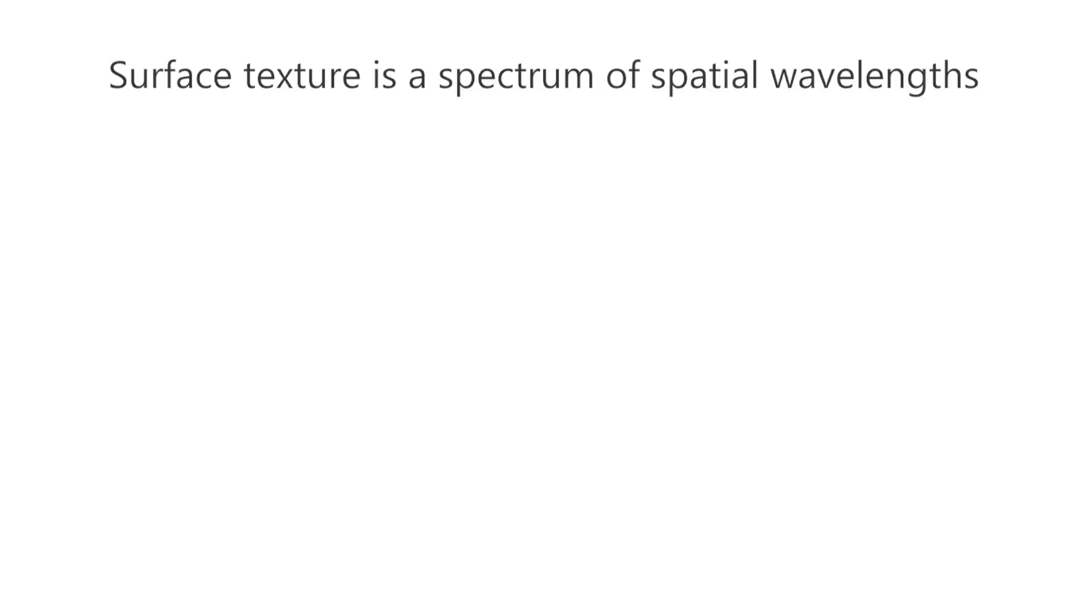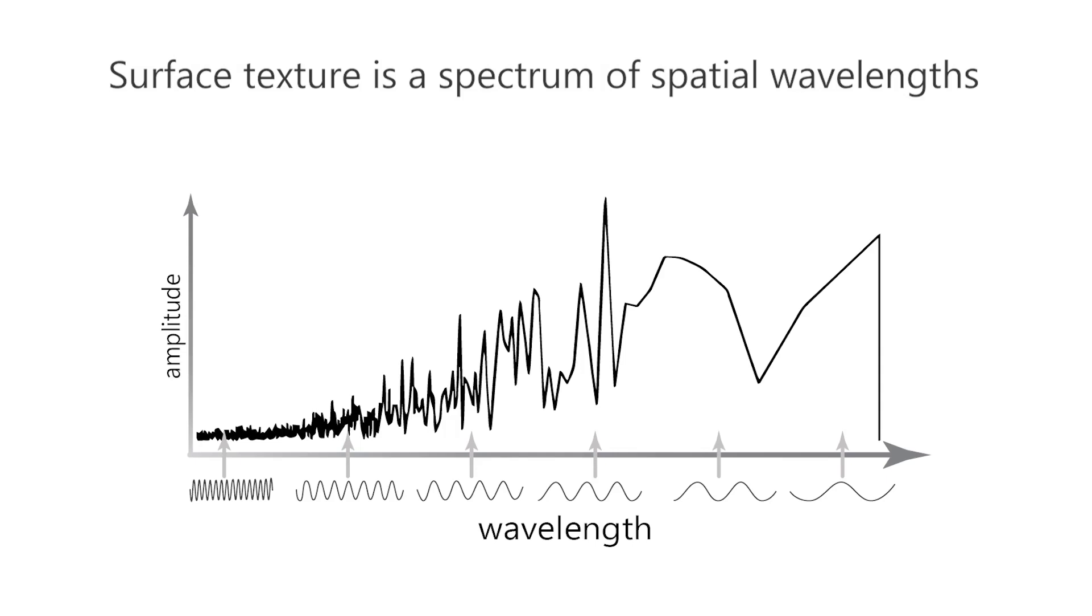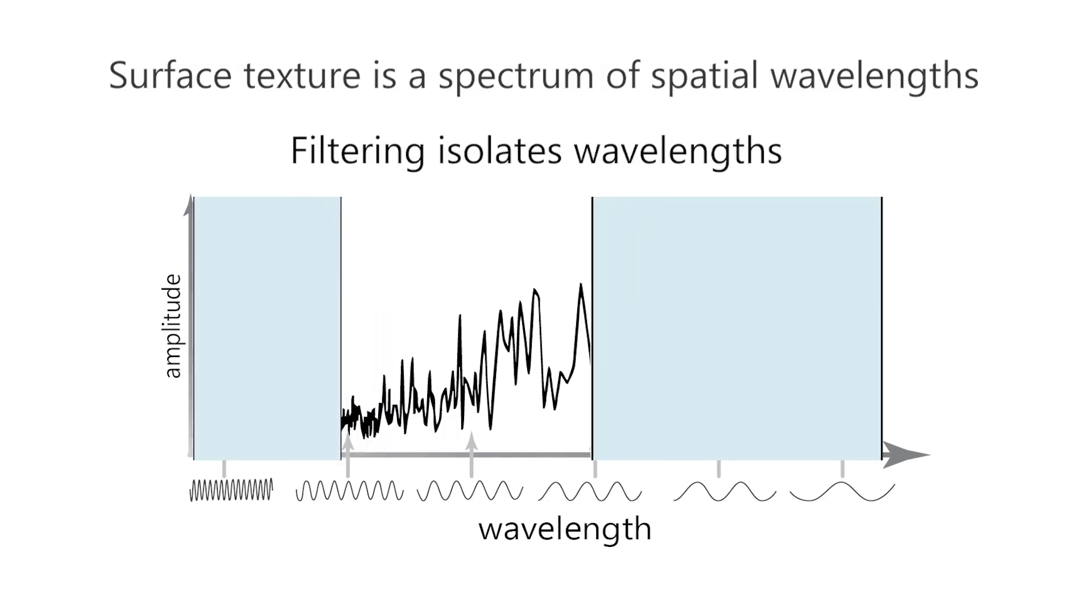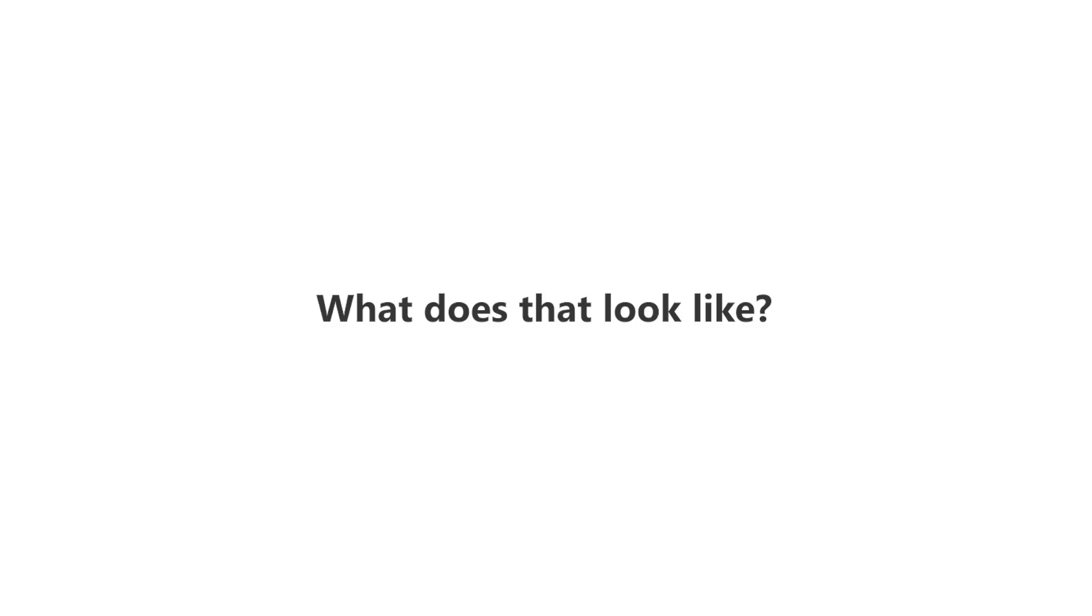We often describe surface texture as a spectrum of spatial wavelengths and filtering as a process to isolate the wavelengths that matter for our application. But what does that really look like?